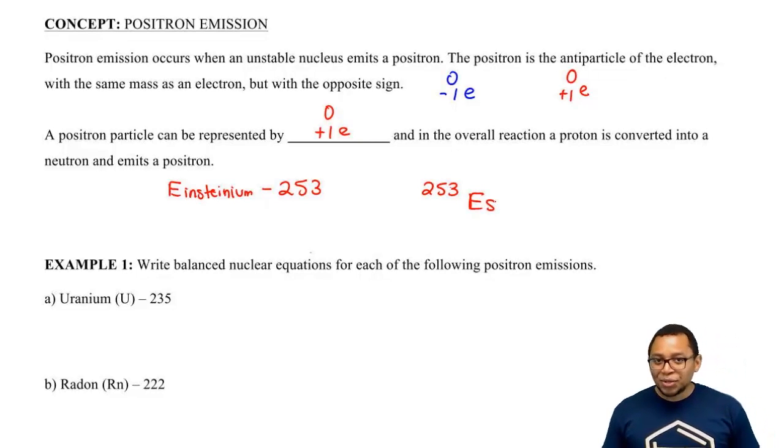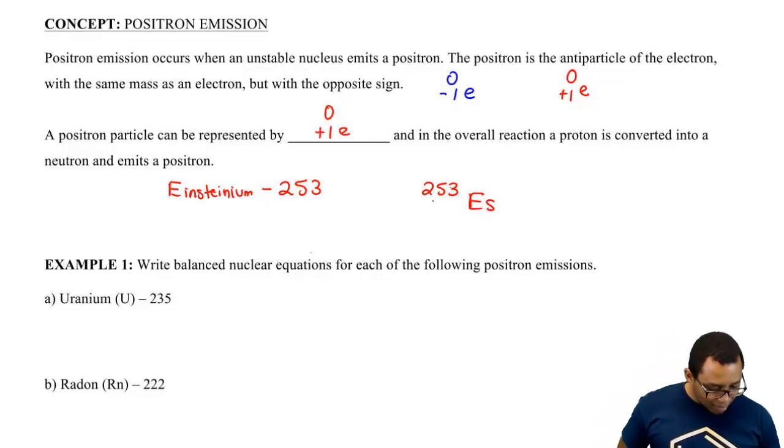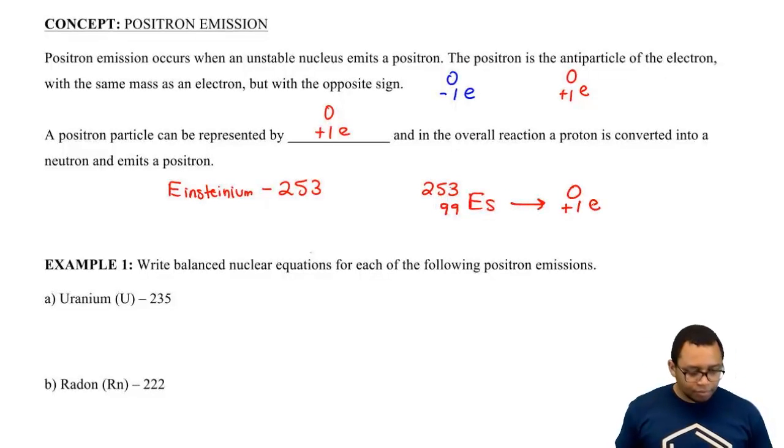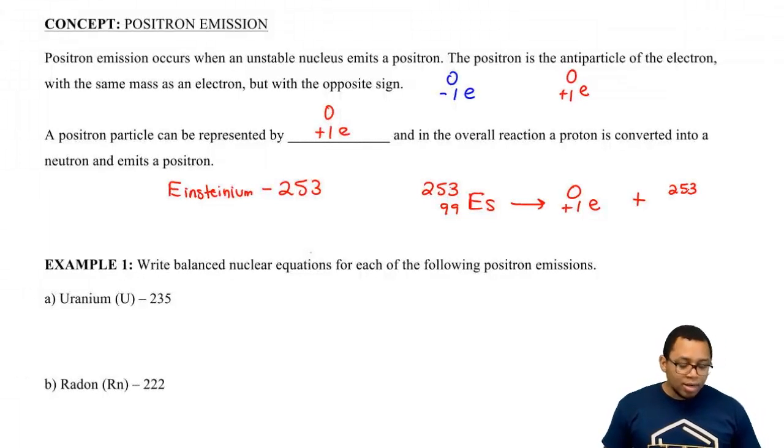So Einsteinium is ES on our periodic table. It has an atomic number of 99. We're going to emit a positron, and because we're emitting a positron, let's see. So because the atomic mass is zero, the new element is still going to be 253.